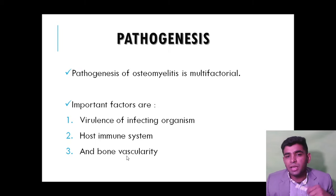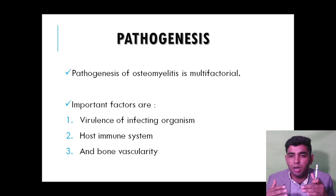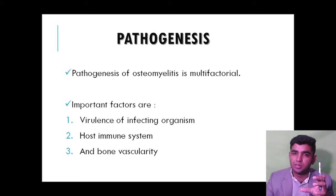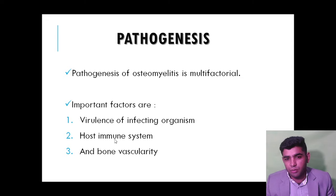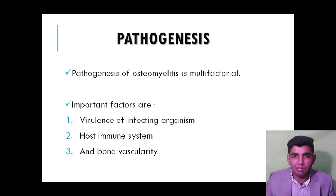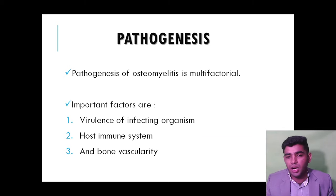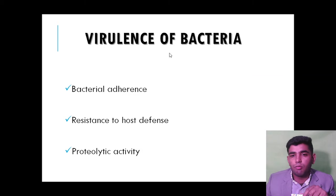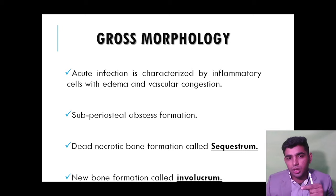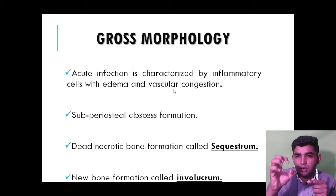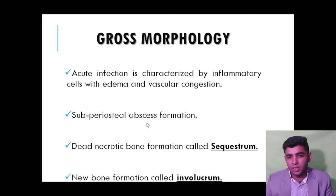The pathogenesis is multifactorial. Important factors include: virulence of the infecting organism — whether it is Salmonella, Staph aureus, or Klebsiella; the host immune system — if our immunity is decreased, chances of infection increase; and bone vascularity. Gross morphology shows inflammatory cells with edema, vascular congestion, and subperiosteal abscess formation.